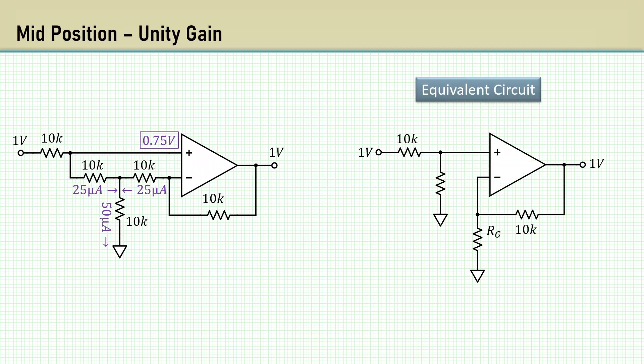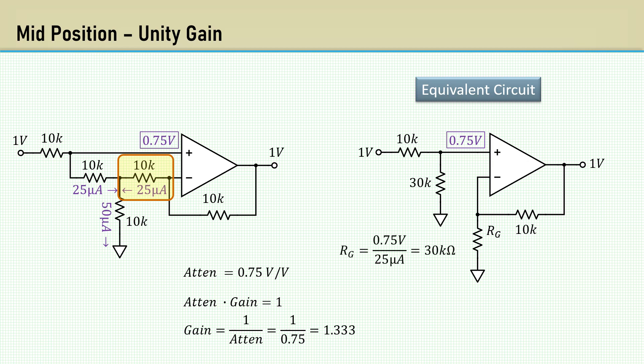Here's an equivalent circuit having both attenuation and gain. With 0.75 volts at the non-inverting input, the equivalent shunt resistance is 30K. Having attenuation of 0.75, the attenuation times the gain is 1, and therefore the gain is the reciprocal of the attenuation at 1 and a third. But we can go further. Since we know that the feedback current is 25 microamps, we can say the equivalent RG is 0.75 over 25 microamps, which equals 30K. Plugging that into the gain equation also gives us a gain of 1 and a third.